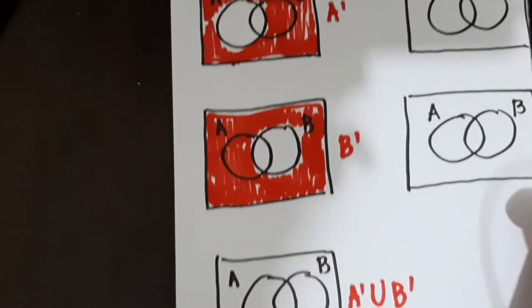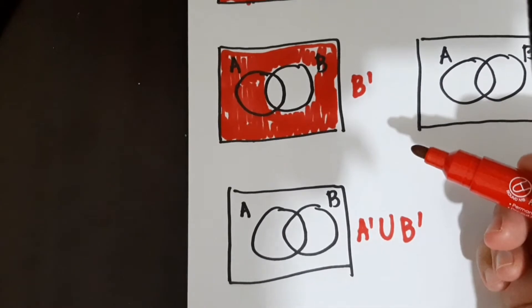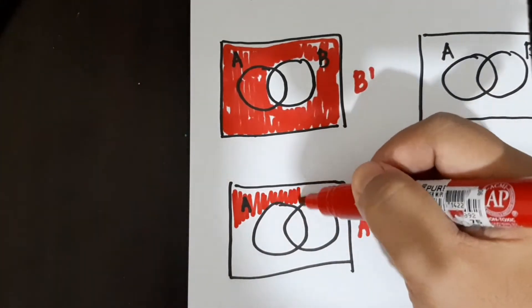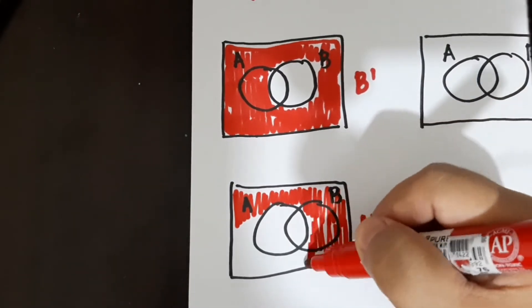So alin dito yung, umpisa natin dito sa not A. So ang may shade sa not A ay yung labas lang, o hindi kasama yung A, set A. So unahin natin yun.